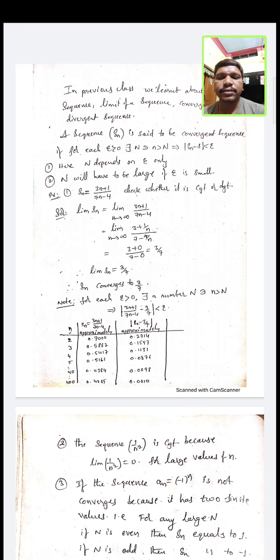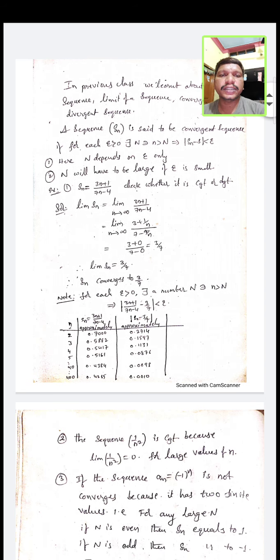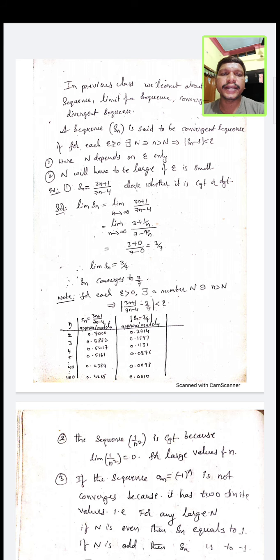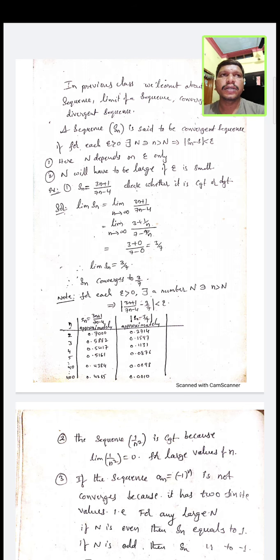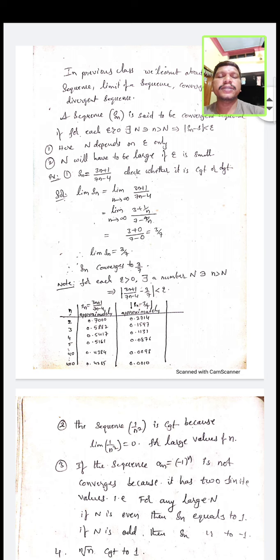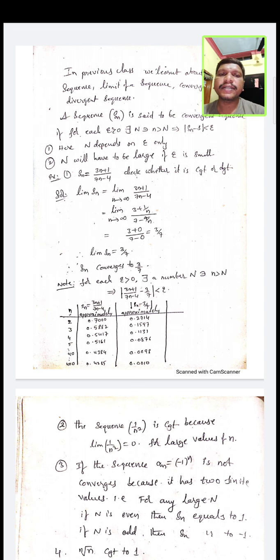A sequence is said to be a convergent sequence if for each epsilon greater than 0, there exists a number N such that for small n greater than capital N, it implies |S_N - L| < epsilon. Convergent means the sequence has a finite limit. If a sequence does not have a finite limit, it is called a divergent sequence.